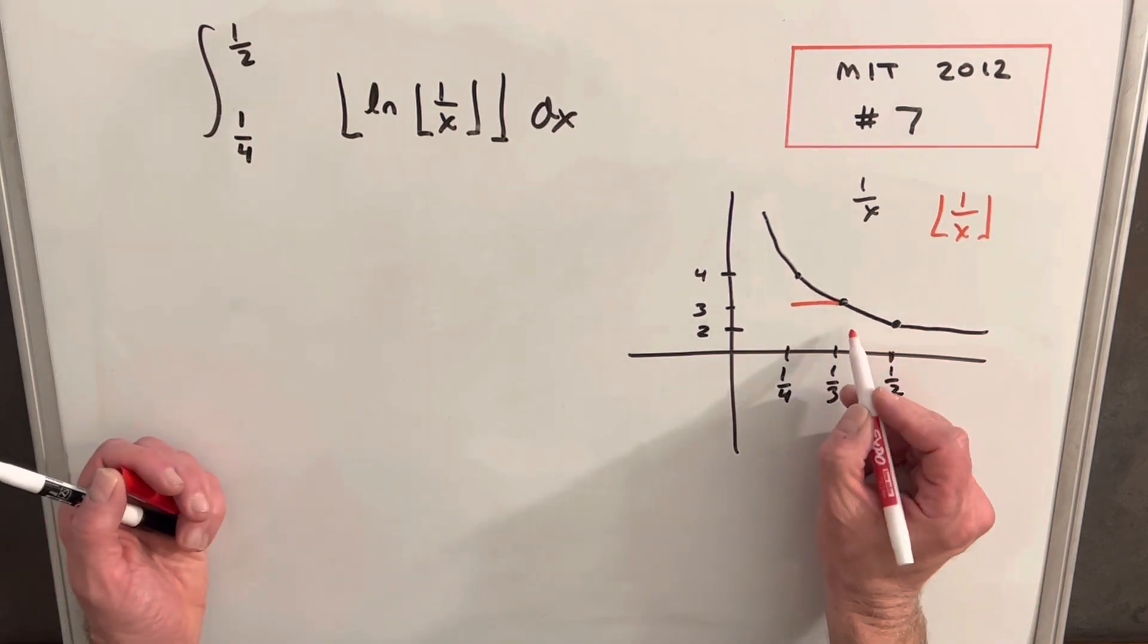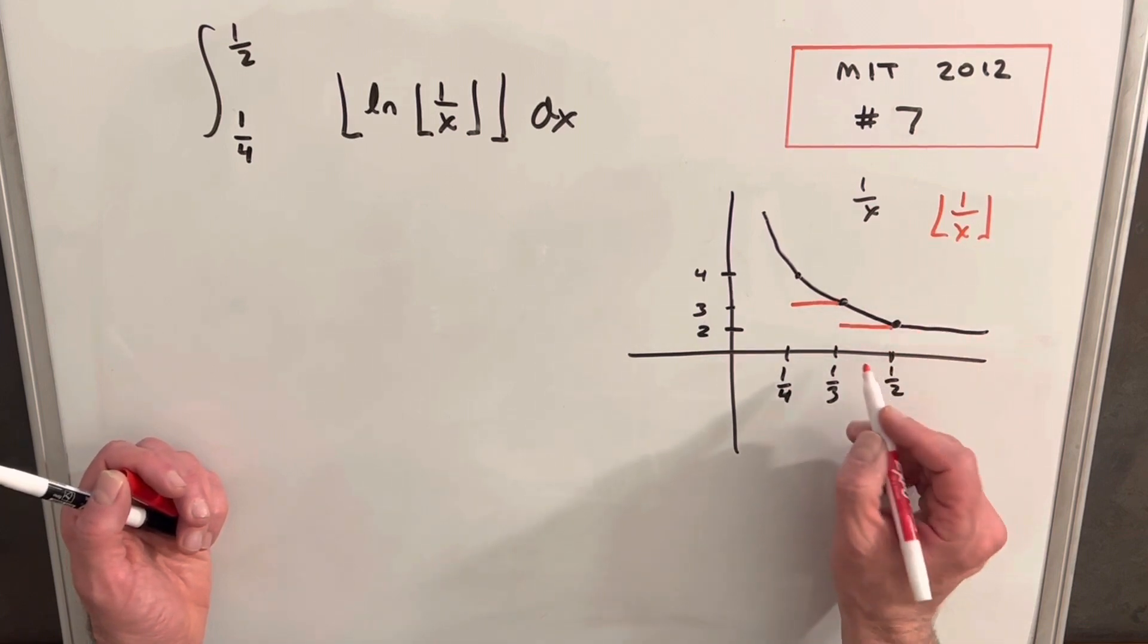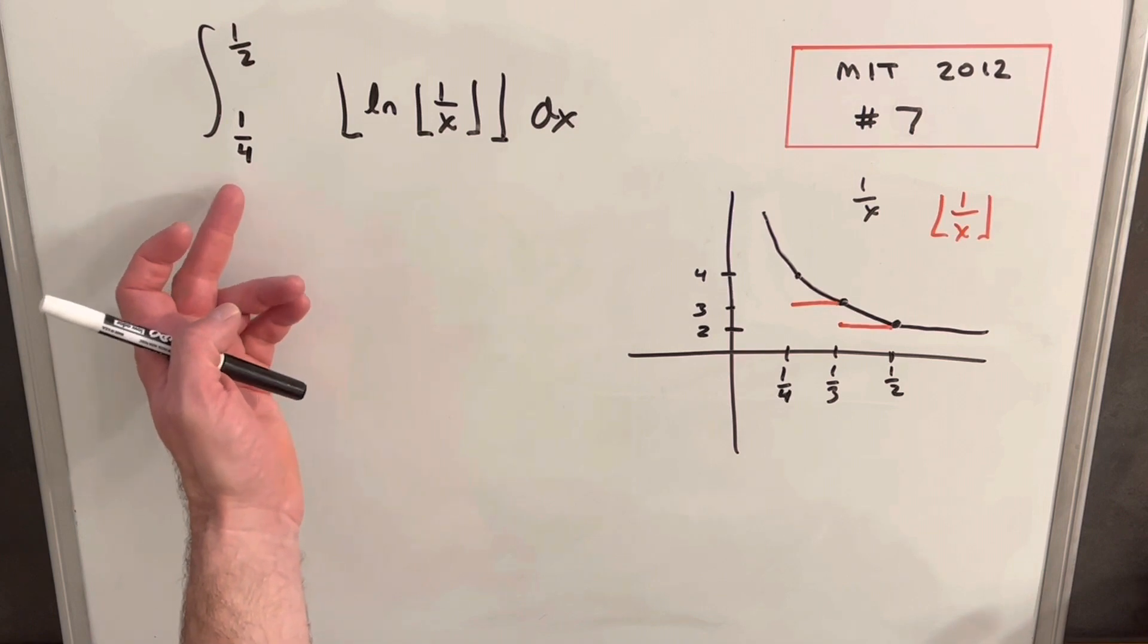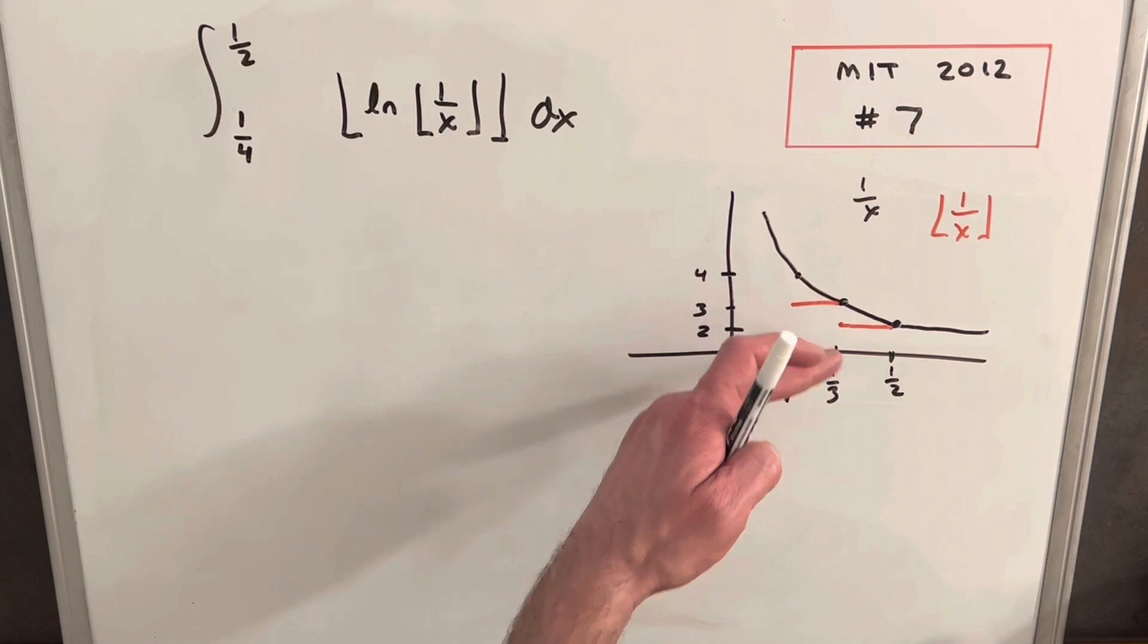And then similarly, the same thing is going to happen in this region right here. Everything, we're going to have values like 2.5, 2.9, 2.1, and those are all going to be rounded down to two. So it turns out within our integral here, this input here is only two values. We're only looking at just threes and twos.